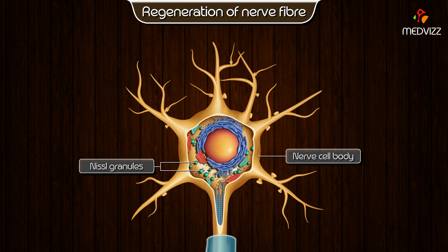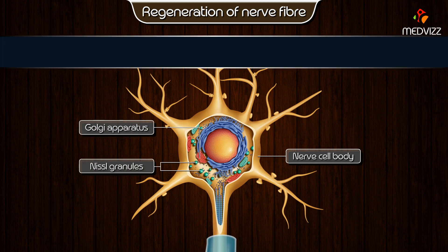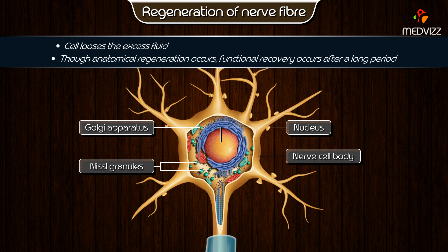In the nerve cell body, first the Nissl granules appear, followed by the Golgi apparatus. The cell loses the excess fluid and the nucleus occupies the central portion. Though anatomical regeneration occurs in the nerve, functional recovery occurs only after a long period.